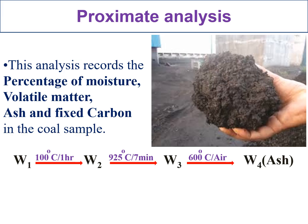Proximate analysis mainly records the percentage of moisture, volatile matter, ash, and fixed carbon present in the coal. In this process, we are able to measure moisture percentage, volatile matter percentage, ash percentage, and fixed carbon by simple operations. This is the way of calculating the percentage of moisture, percentage of volatile matter, percentage of ash, and percentage of fixed carbon.